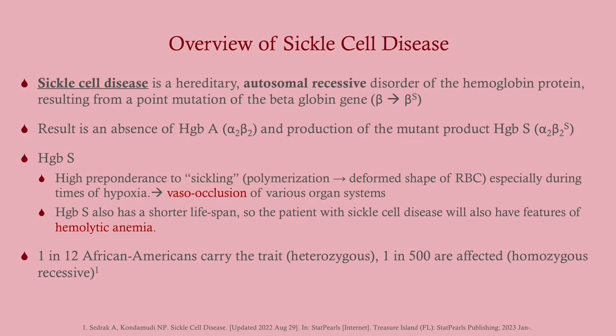Sickle cell disease is a hereditary autosomal recessive disorder of the hemoglobin protein, specifically of the beta globin gene. What happens is a single nucleotide substitution leads to a missense mutation and completely disrupts the beta globin gene. Remember that hemoglobin has alpha-2 and beta-2 components, so if beta gets messed up it ruins the entire hemoglobin protein. We denote this as hemoglobin S — S for sickle.